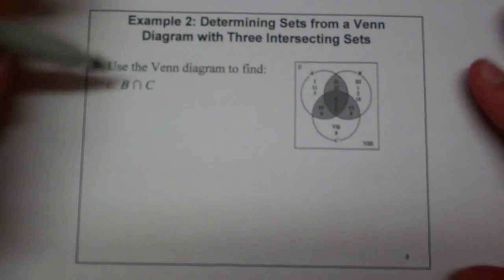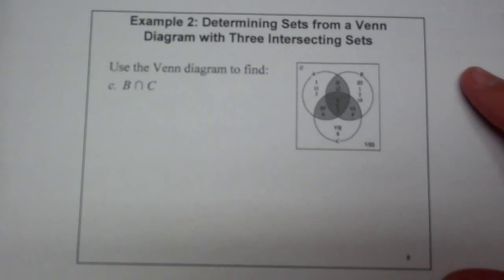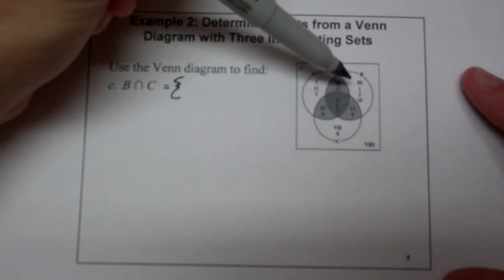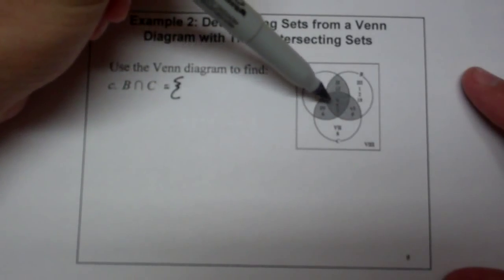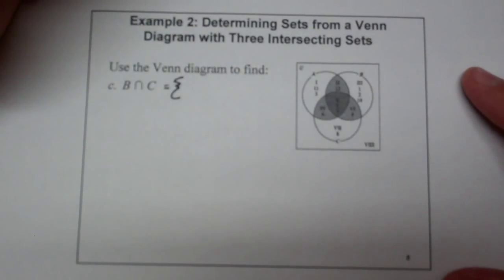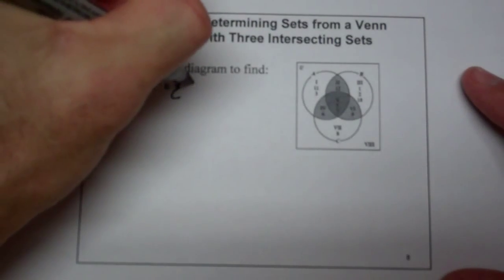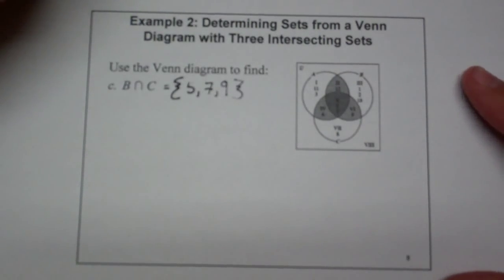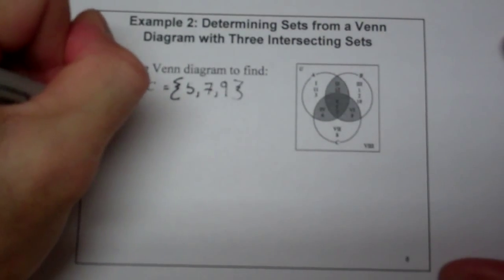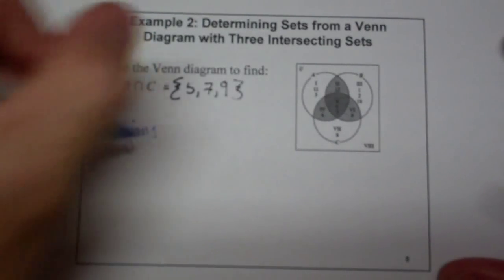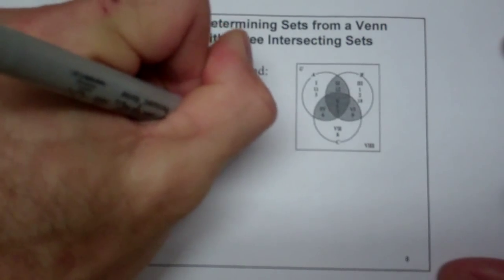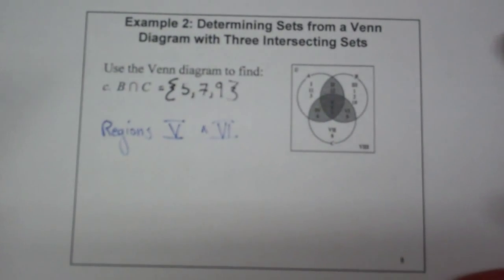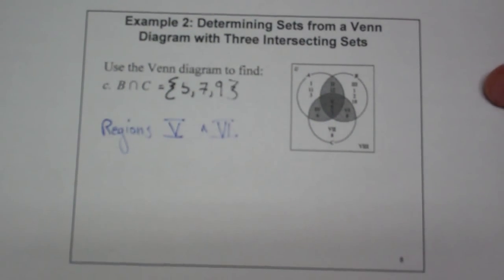Just another example — B intersection C. B intersection C is going to be all of this overlap, so we're looking at regions 5 and 6, and so you're going to have 5, 7, and 9. So regions 5 and 6 are going to contain the elements 5, 7, and 9, and that's your B intersection C.